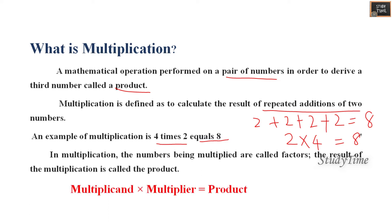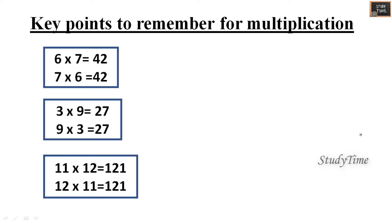Numbers being multiplied are called as factors and the result of multiplication is called as product. Multiplicand into multiplier is equal to product. Next, key points to remember for multiplication: six into seven or seven into six is equal to 42. Though the numbers are interchanged, you will be getting the same product.